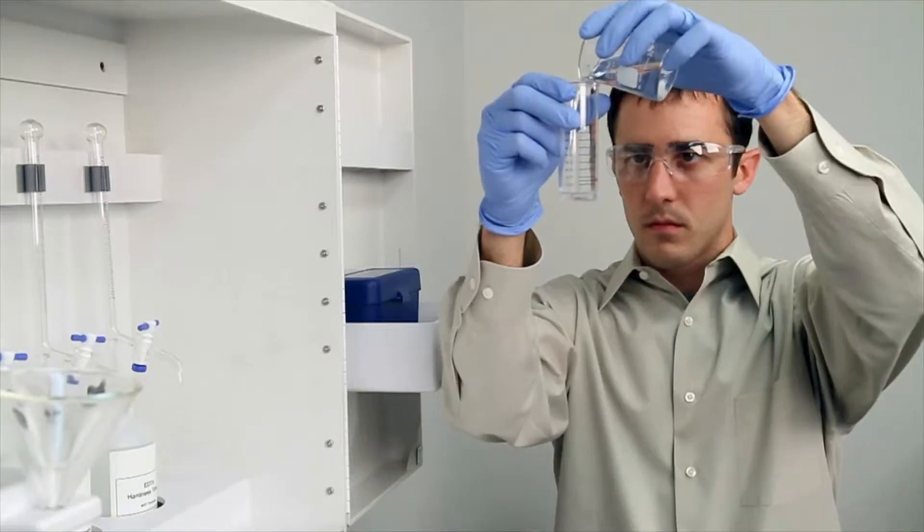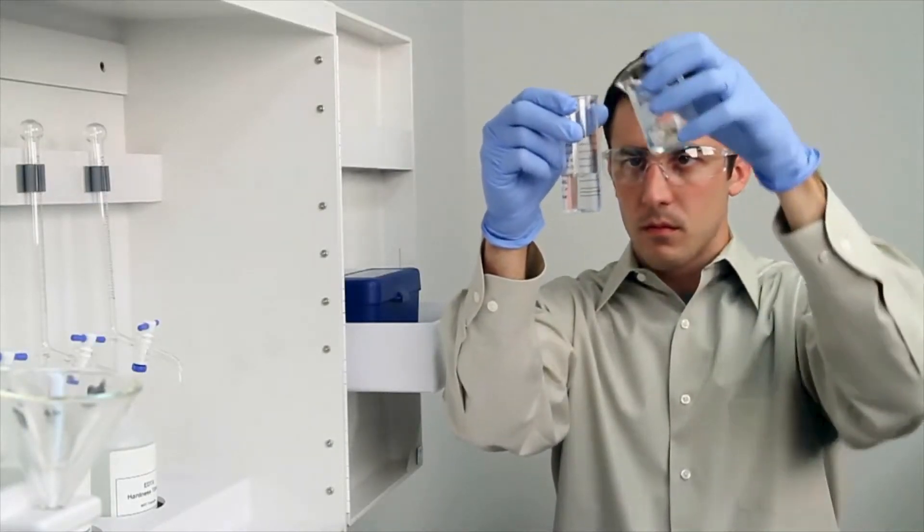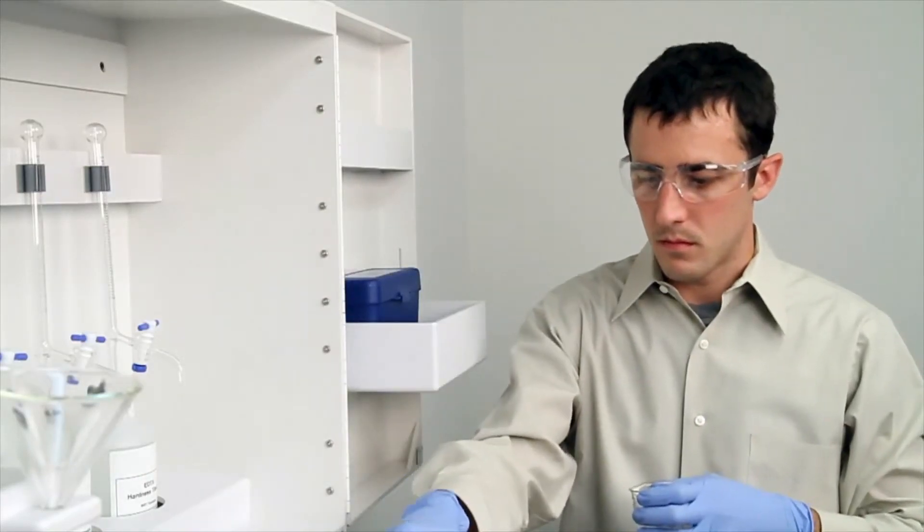To get an accurate sample size, you want to hold the vial close to eye level. Once you feel you have an accurate sample, place the vial on a level surface and bend down to eye level.